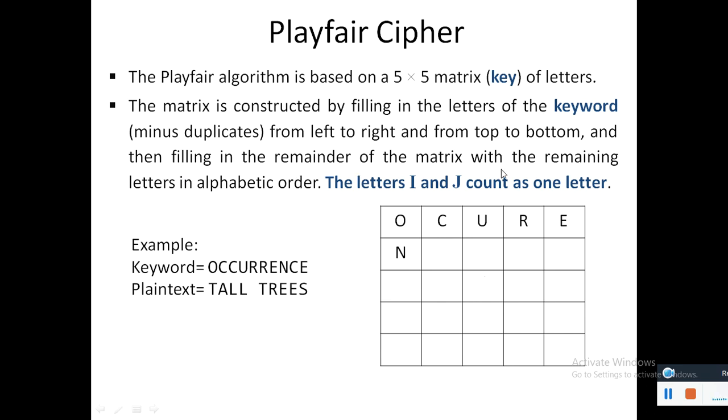Now we can fill the remaining of the matrix with the letters in alphabetic order, where I and J is counted as one letter. So A, B, C already occurred, G, H, I and J is taken as one.